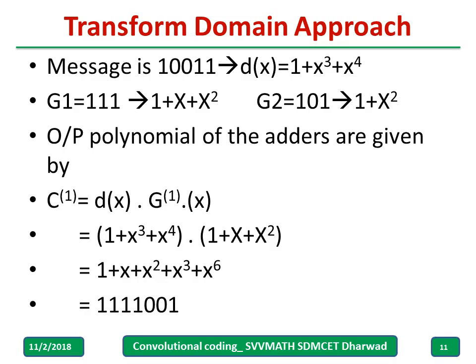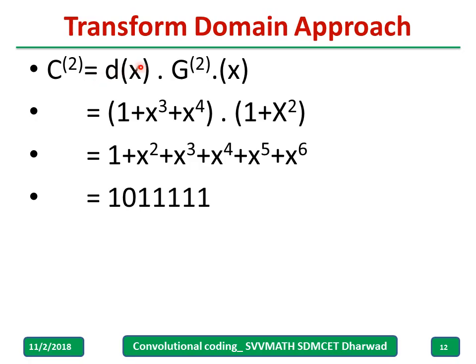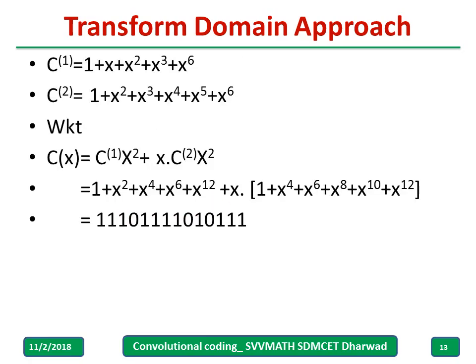Similarly, compute c of 2 using the same d of x but with generator polynomial g2, which is different. Multiply the two polynomials and write the result in terms of 0s and 1s. We now have c of 1 and c of 2.